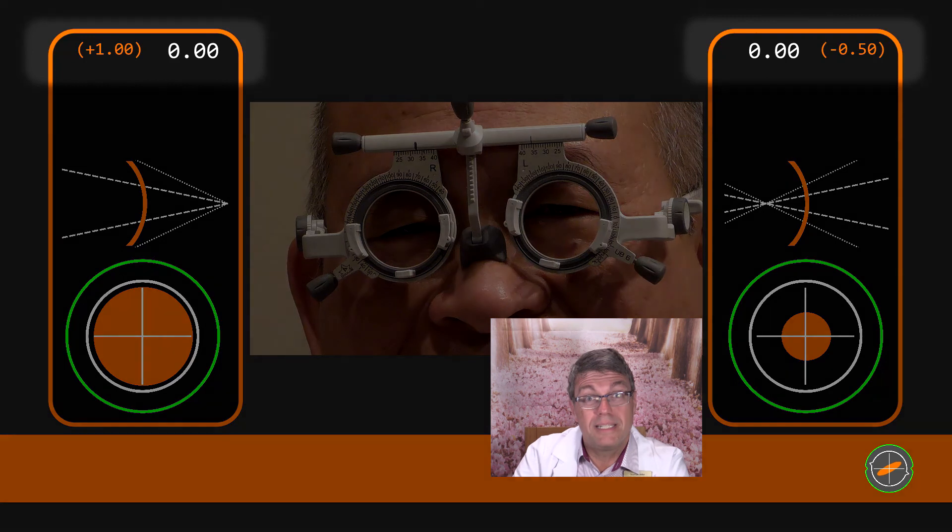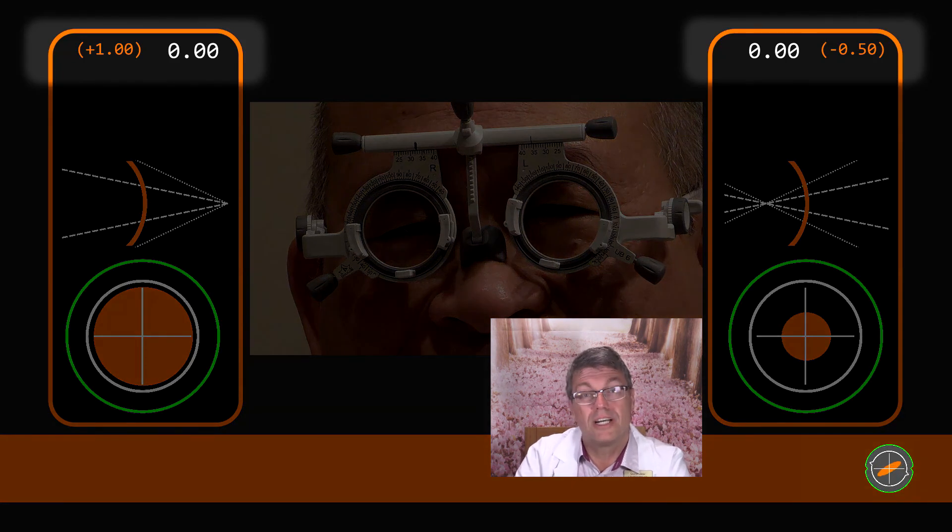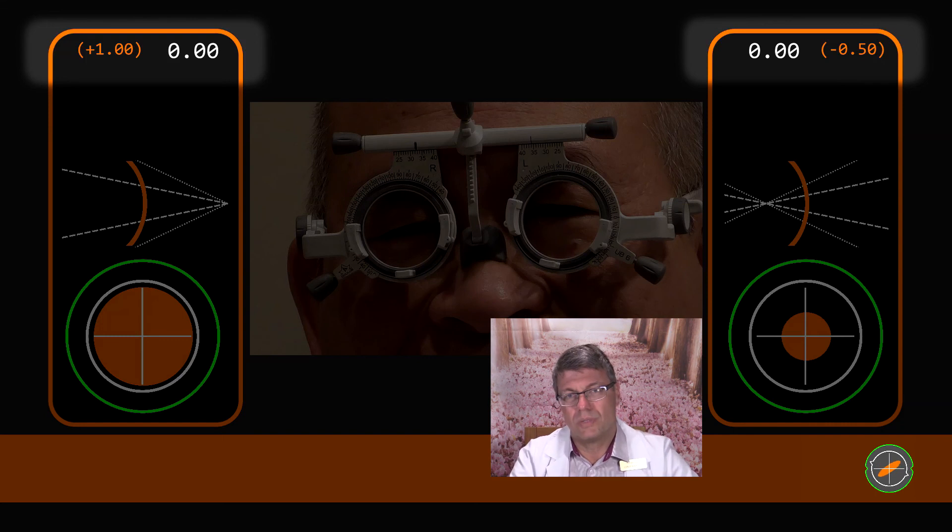As you can see I deliberately over corrected his right eye by plus one and under corrected his left eye by minus 050. As you know it's common for your autorefractor to under plus hypermetropes and over minus myopes. So the right eye is a reconstruction of this situation. The left eye will demonstrate adding minus lenses which as you'll see must be treated entirely differently from adding plus lenses.